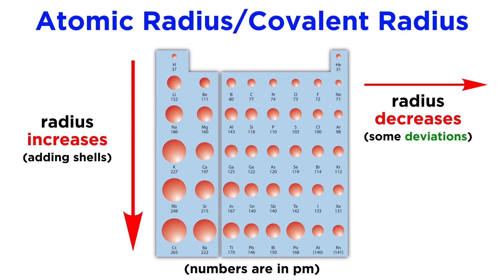There are a few deviations to this trend, particularly if we were to examine the transition elements of a particular period, but in general, atomic radius will decrease as we move through a period.